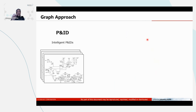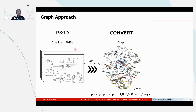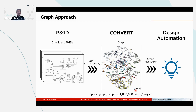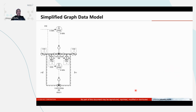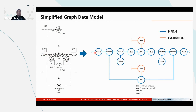Our approach is like this. First, we use CAD data — P&ID data — and from that we can extract XML. We developed a graph converter, and it produces about 1 million nodes per project. Then we can run graph algorithms, and then we can achieve design automation. The simplified graph data model considers each component as a node that we connect by relationships. We use different labels for piping and instruments, and of course each node has a property.